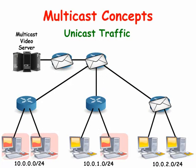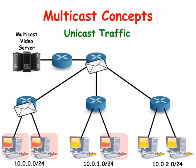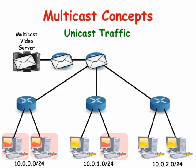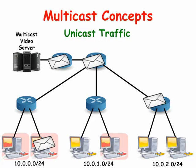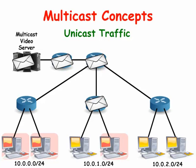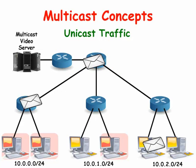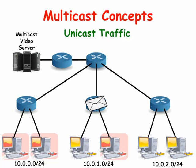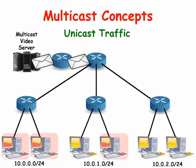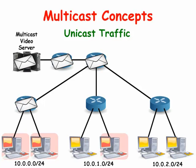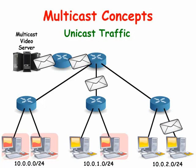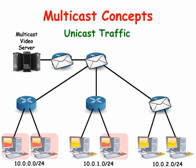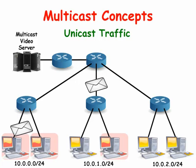But suppose that there were numerous client computers that all wanted the exact same information. For example, suppose they all wanted to view the same video images. If the server is using Unicast and there are 100 client computers wanting the same video feed, the server will have to transmit 100 copies of the exact same video packets, one for each client.